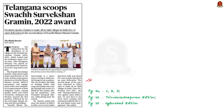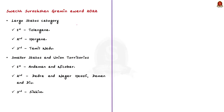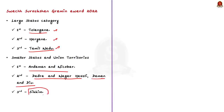The next news article talks about Swachh Bharat Mission Gramin and the Swachh Sarvekshan Gramin Award. Yesterday, the President of India presented the Swachh Sarvekshan Gramin Award 2022 to the winners. In the large states category, Telangana was ranked first, Haryana second, followed by Tamil Nadu at third. Among the smaller states and union territories, Andaman Nicobar secured first position, followed by Dadra Nagar Haveli and Daman & Diu at second, and Sikkim at third.